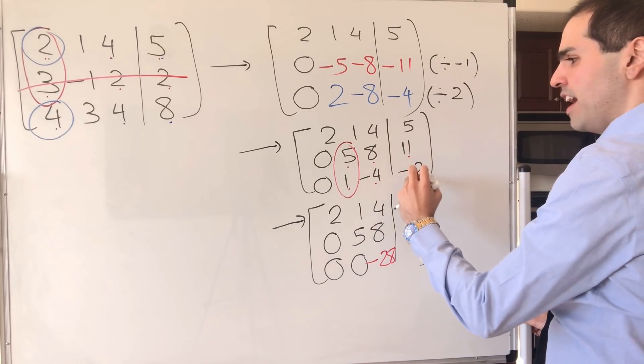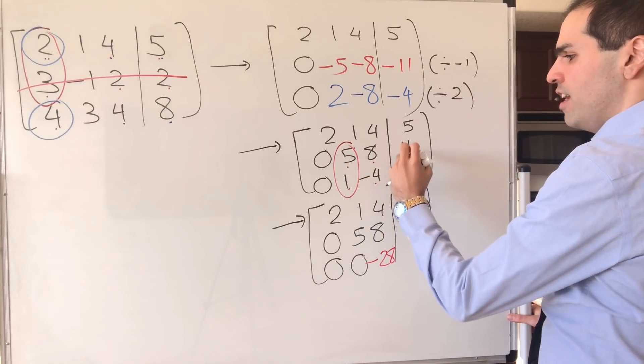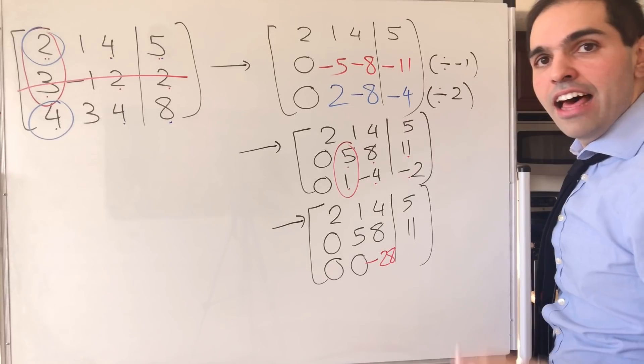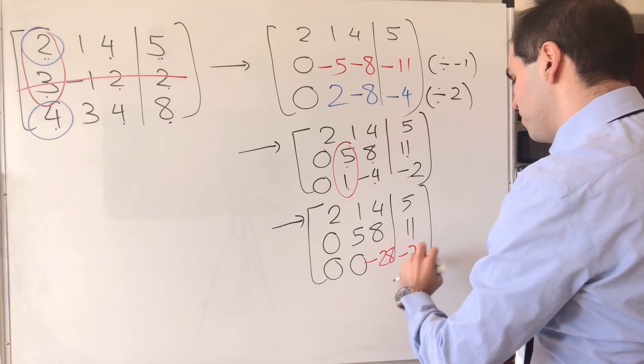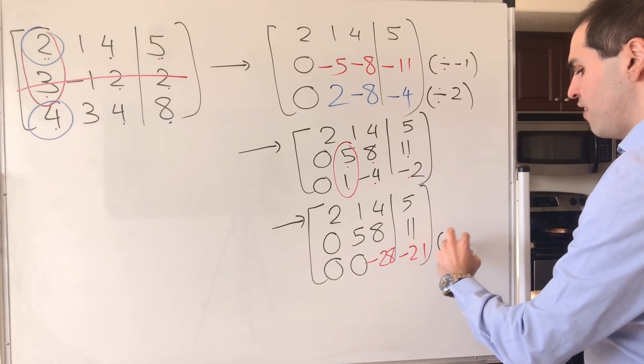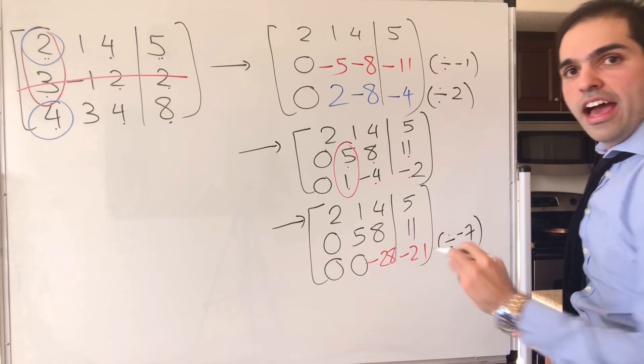And just do 5, 11, 1, minus 2. So minus 10, minus 11. That is minus 21. And then, the awesome thing is, you can simplify this.